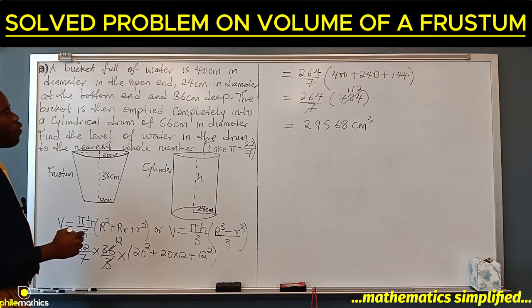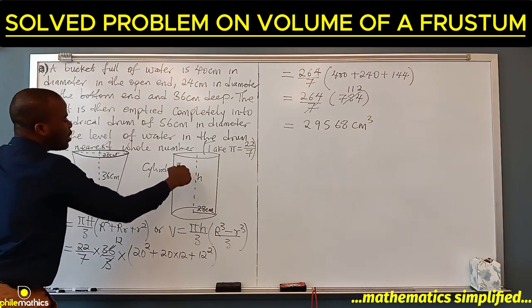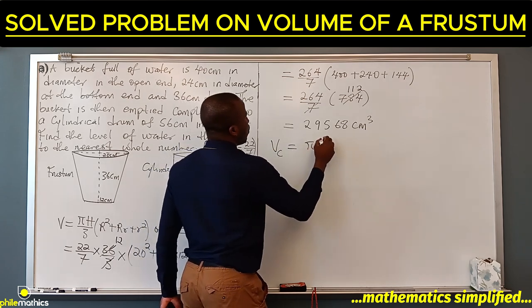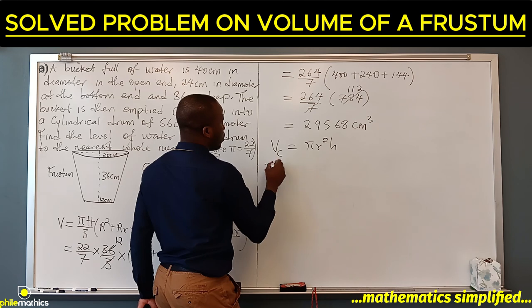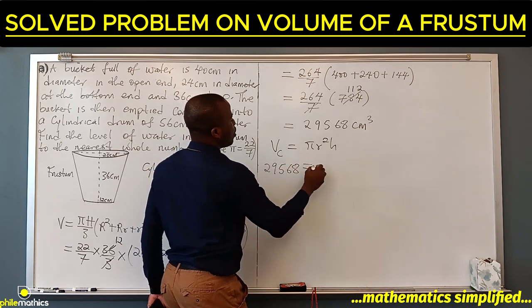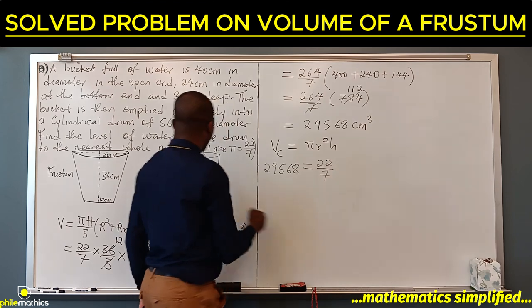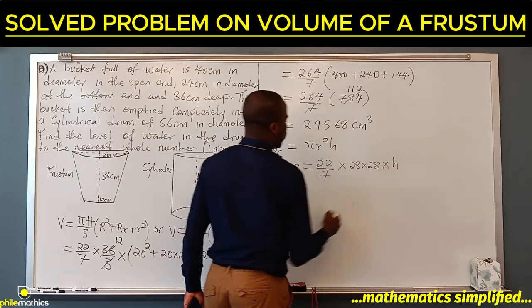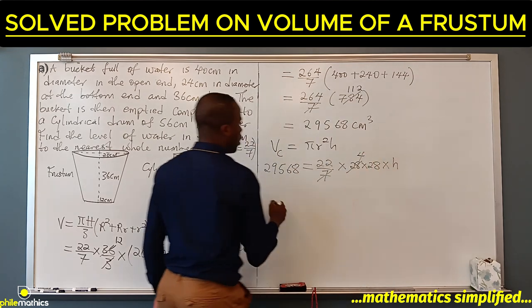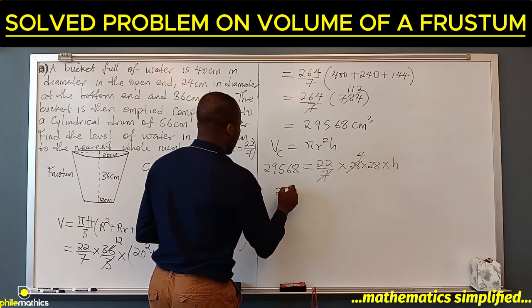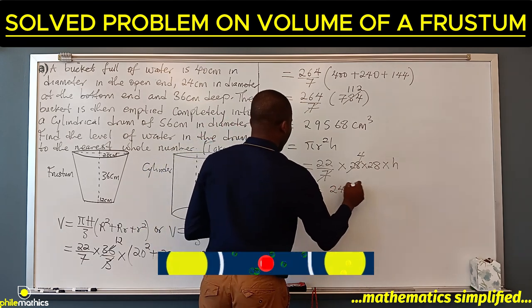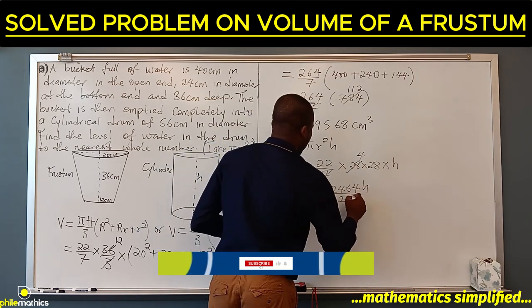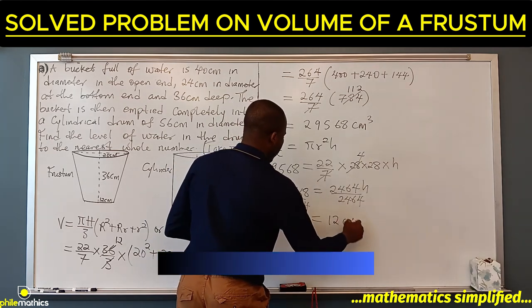Now we are going to look for the height of this water inside the cylindrical shape. We know that the volume of a cylinder is πr²h. This volume is the same as 29,568. So 29,568 = 22/7 × 28² × h. Seven can cancel 28 four times, and if we multiply, we'll have 29,568 = 2,464h. If we divide both sides by 2,464, we'll have h = 12 cm, to the nearest whole number.